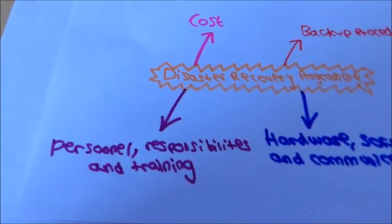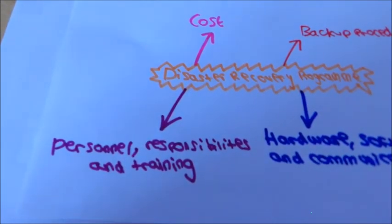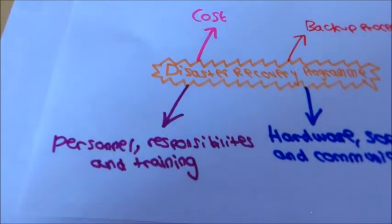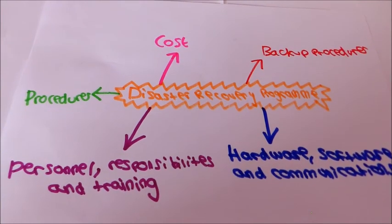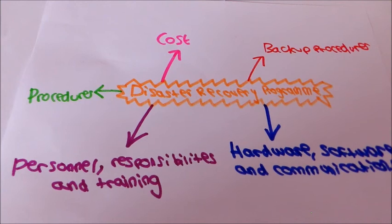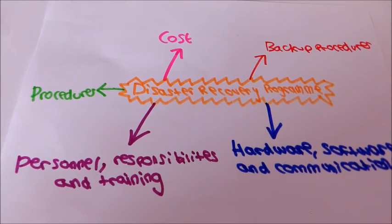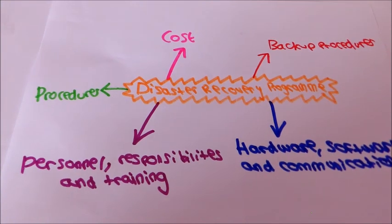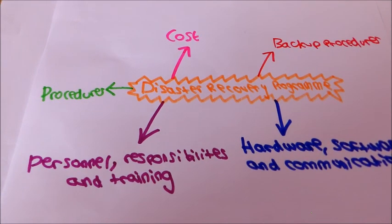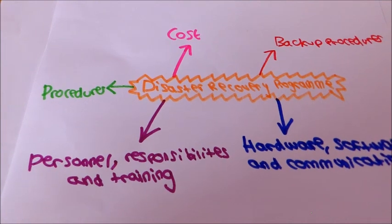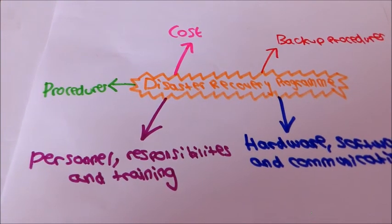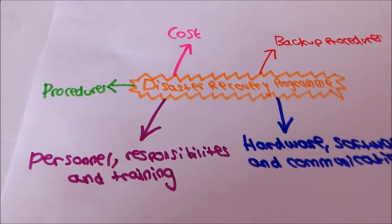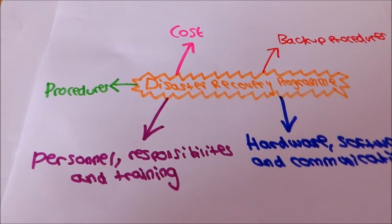And define a staff code of conduct for using computer systems, for example no abuse of emails. Procedures also need to be considered such as producing procedures for minimising the risk and testing the plan on a regular basis to make sure that it's still sufficient. Establishing physical protection also needs to be done and establishing security rights for the access and setting up auditing trials also needs to be done.